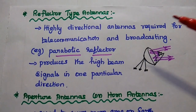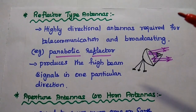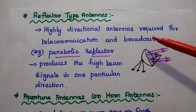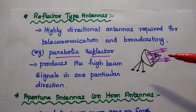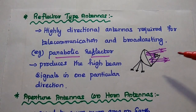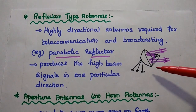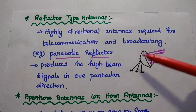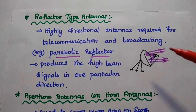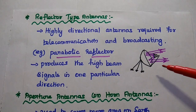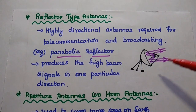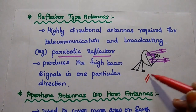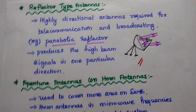The next type is reflector antennas. These are highly directional antennas required for telecommunication and broadcasting applications. For example, the parabolic reflector is widely used in satellite communication systems to produce a high-gain beam signal in a particular direction.